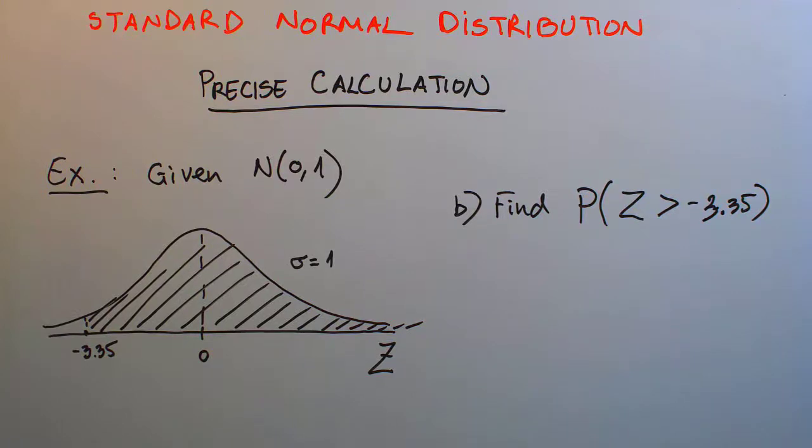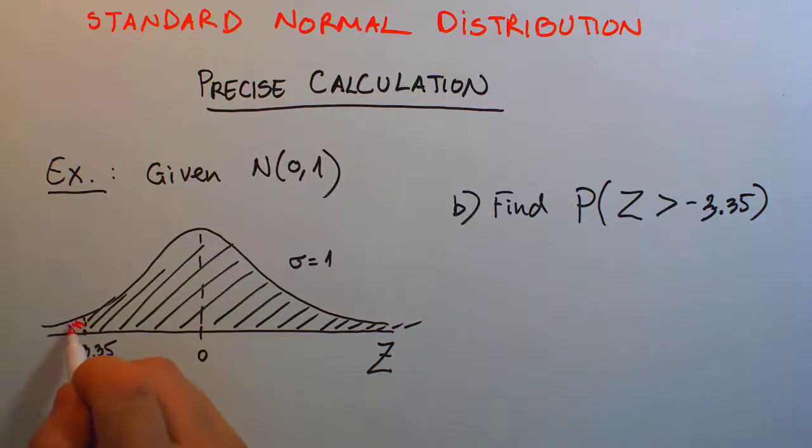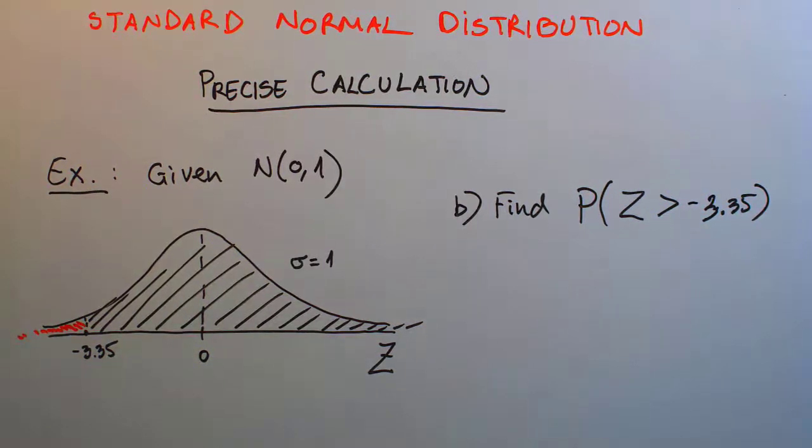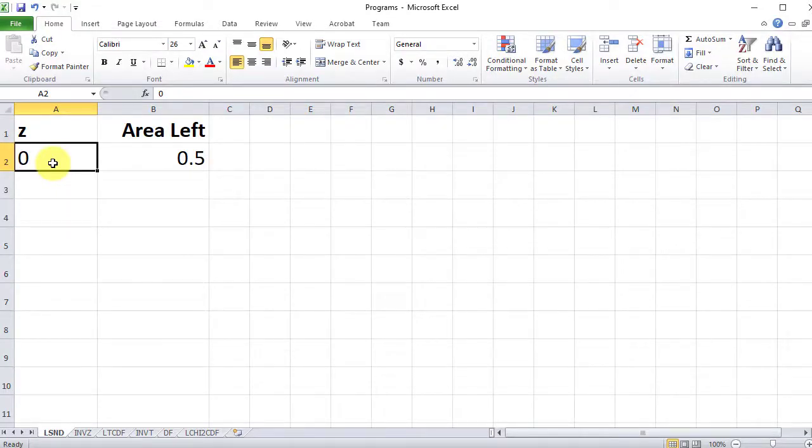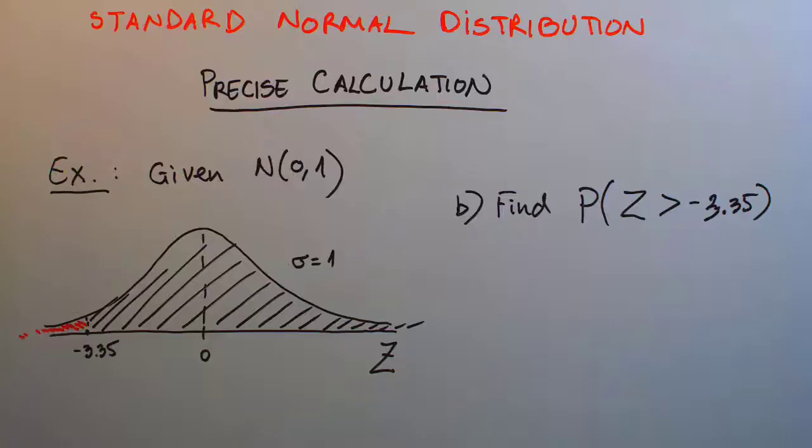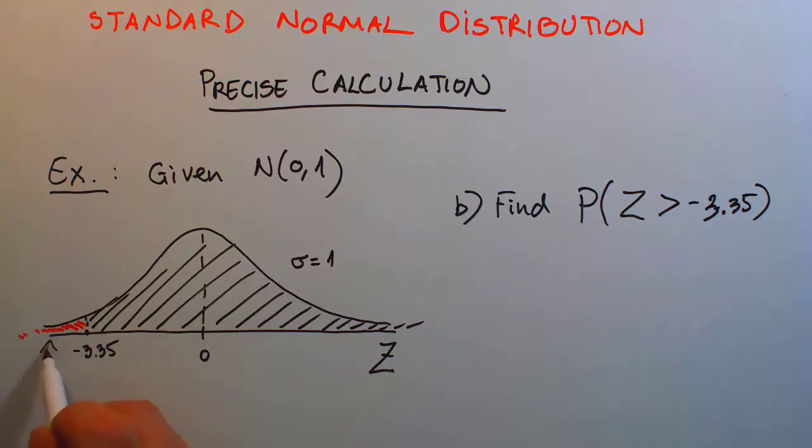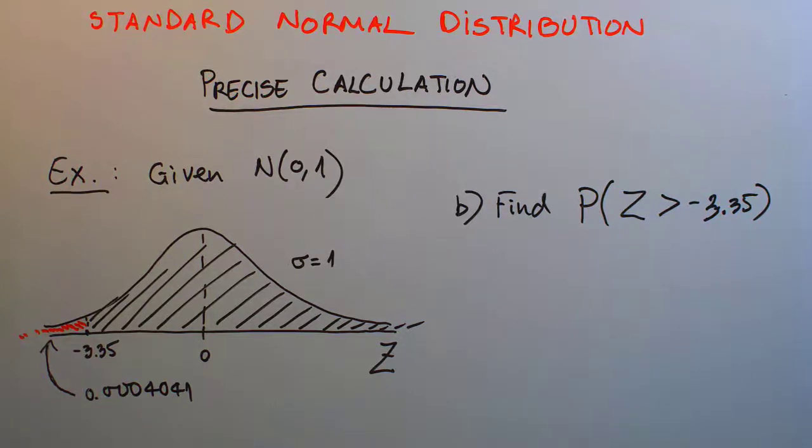The left area method tells us that we can easily calculate this area to the left. My LSND program, or you can find this on many other online resources, can easily get to that value. With my LSND program in Microsoft Excel, I can enter negative 3.35 and hit enter. My left area, this small area, this little tiny tail, is in decimal value 0.0004041. You can feel about how small that probability is.